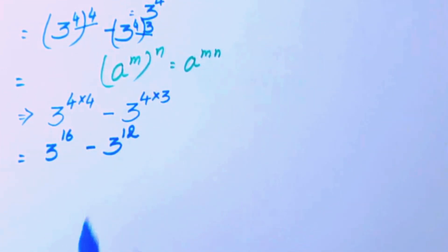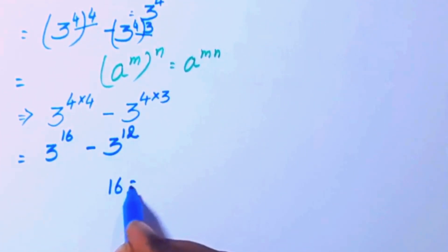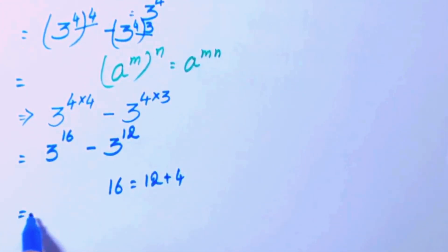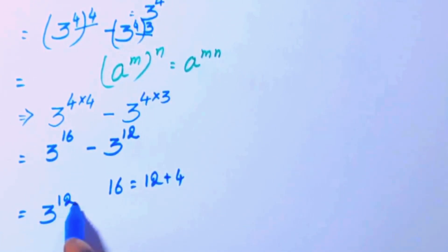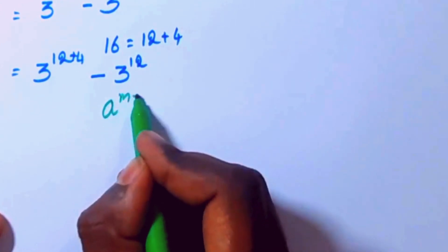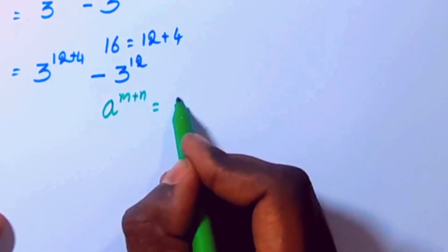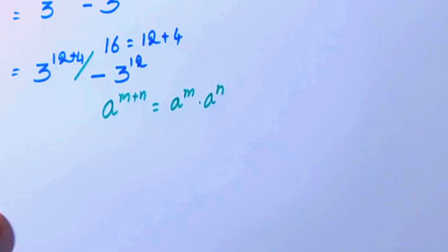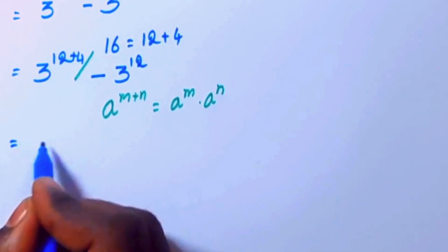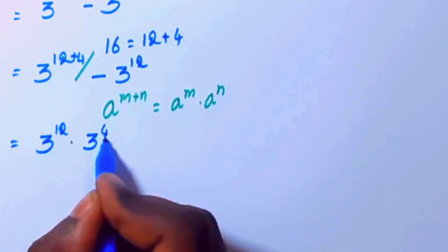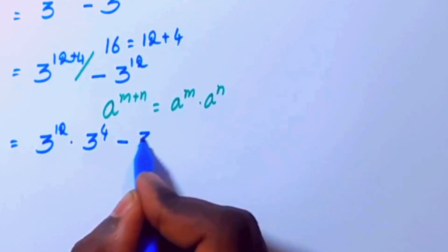Now this 16 can be written as 12 plus 4. So we have 3 power 12 plus 4, minus 3 power 12. Applying the identity a power m plus n equals a power m times a power n, we get 3 power 12 times 3 power 4, minus 3 power 12.